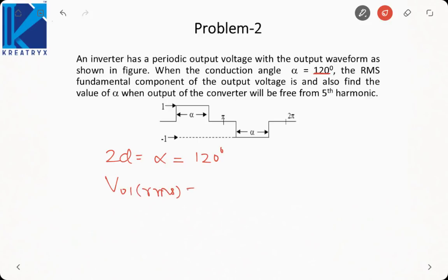V01 RMS. We saw the Fourier series was 4 VDC by n pi. So it will be 2 root 2 by pi VDC sine D sine pi by 2. Why 2 root 2 by pi? Because we are taking RMS value. So 2 root 2 by pi, VDC is given to be 1. D will come out to be 60, sine 90 will also be 1. So this will come out to be 0.78 volt, that is root 6 by pi, because it will be root 3 by 2.